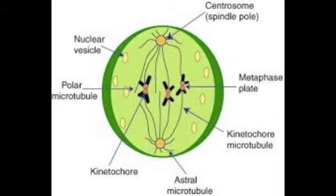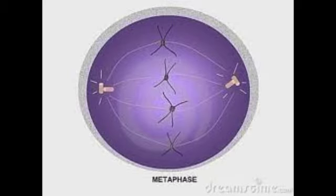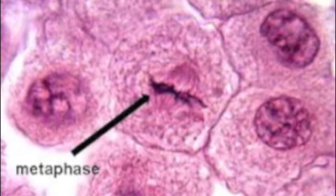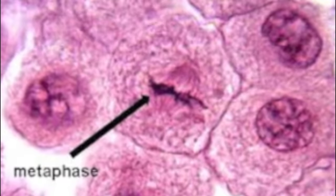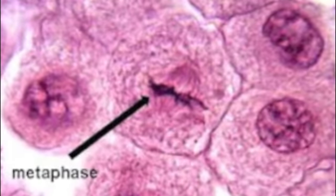Technically, before metaphase even begins, there is another step named pro-metaphase. During this phase, the nuclear envelope disassembles, and the chromosomes develop two kinetochores at their centromere. These kinetochores are what the spindle fibers latch onto so that these homologous chromosomes can be pulled toward the metaphase plate. Metaphase, specifically, is where the chromosomes lie across the plate at right angles, which is different in metaphase 1, which we will speak about later on.